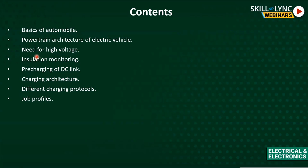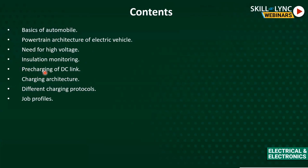I'll explain why we are going for high voltage. In the present market there are many players like Tigur EV working at 72 volts, Mahindra e-Verito at 72 volts, Hyundai Kona operating around 300 volts, and Nexon EV and MG ZS EV operating around 300 to 400 volts. I'll explain why we need high voltage and not 72, 12, or 48 volts. High voltage requires extra safety features — one being insulation monitoring.